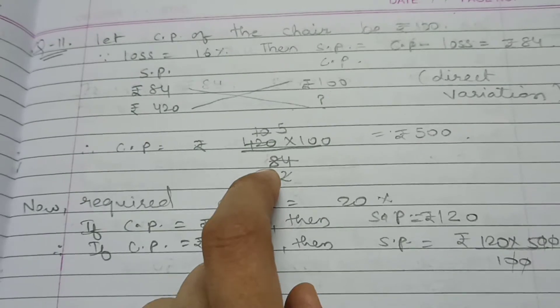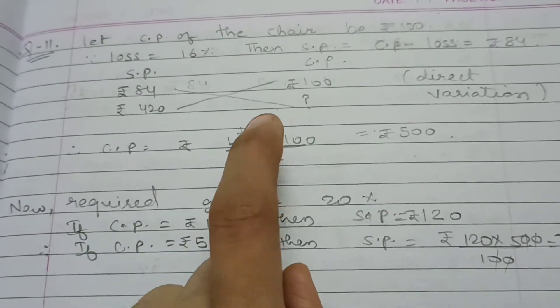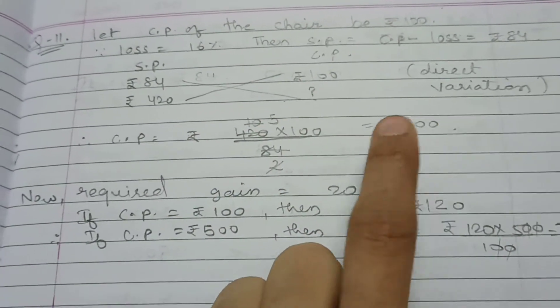So, CP is equal to Rs. 420 multiplied by 100, cross multiplication, divide by 84. After cancellation, 420 by 84 equals 5, so 500.